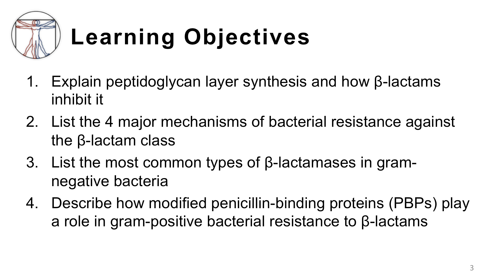This slide lists the learning objectives: explain the peptidoglycan layer synthesis and how beta-lactams inhibit it; list the four major mechanisms of resistance against the beta-lactam class; list the most common types of beta-lactamases in gram-negative bacteria; and describe how modified penicillin binding proteins, or PBPs, play a role in gram-positive bacterial resistance to beta-lactams.